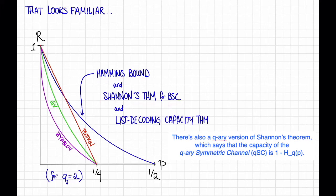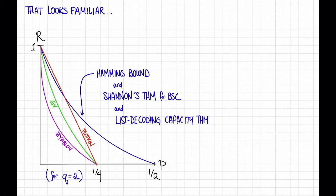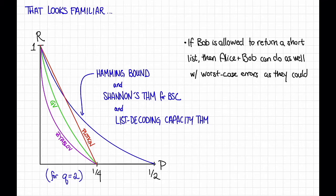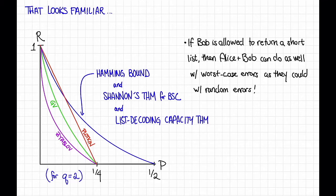The takeaway here is that if Bob is allowed to return a short list in the setting with worst-case errors, then Alice and Bob can do as well as they could with random errors, even though the errors are worst case. In particular, we can let p get arbitrarily close to a half and still have positive rate and a good list decodable code. On the other hand, the Plotkin bound says that for worst-case errors, if I want p to be that large — in fact any larger than a quarter — then I have no hope of uniquely decoding from a p fraction of worst-case errors, at least for binary codes. So this says that if Alice and Bob are willing to return just a short list, they can get huge gains in terms of the amount of error they can tolerate.